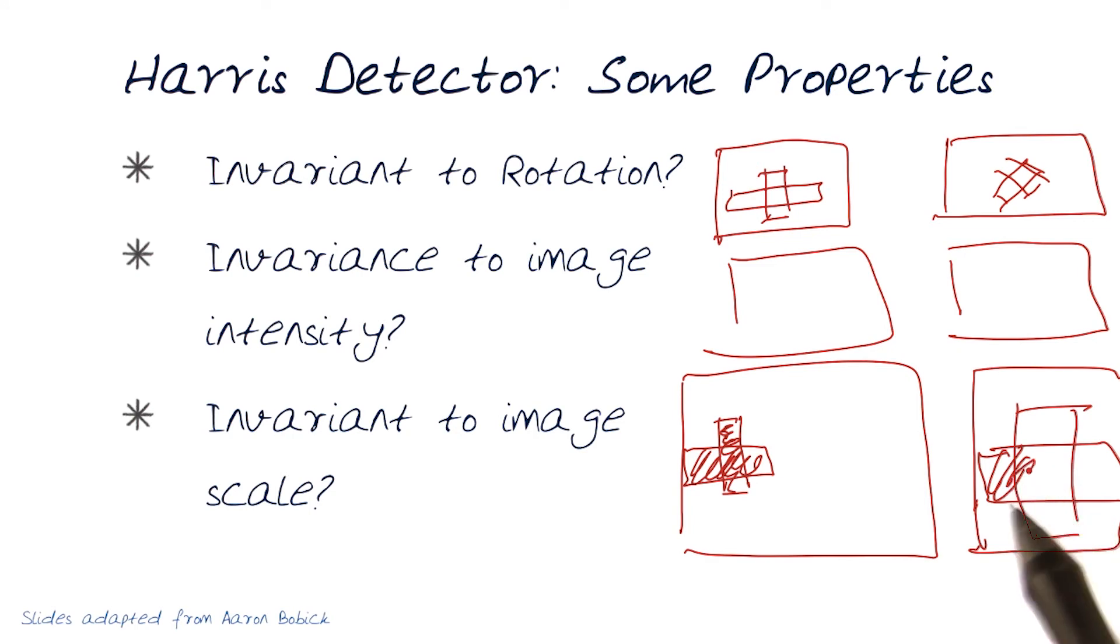So how do we deal with the fact that the same object might be occurring in an image pair but appear to be very large? So in essence, now we need to start seeing, does the Harris detector provide support for these types of invariances, and what happens?